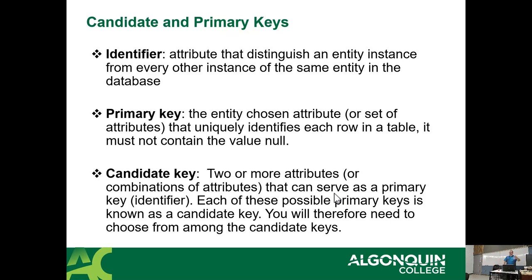Date of birth can't be used as an identifier because there's going to be more than two people with the same birthday in the school. Phone number isn't great either because there are cases where two students from the same household are attending at the same time. So when originally creating the student information system, they chose to add in a student number to make sure every student record is unique.